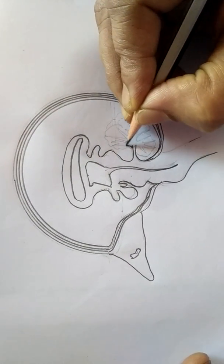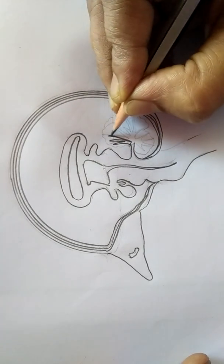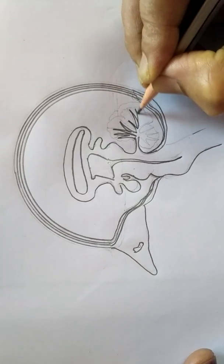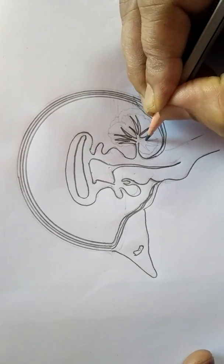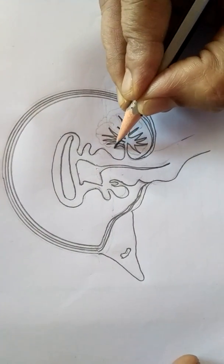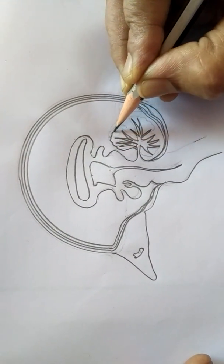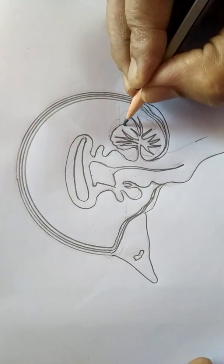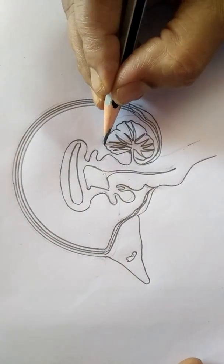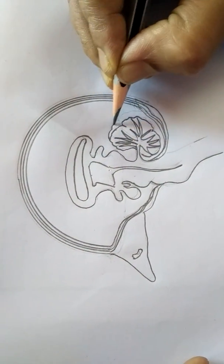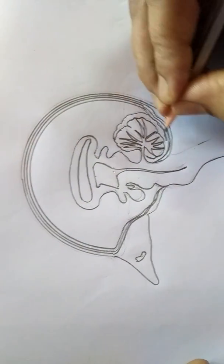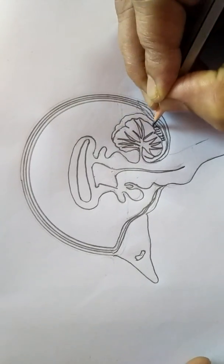First you draw the branches with the pointed pencil. Draw the branches like this. Afterwards, around this, draw like this and double line for this. And fill this space with the straight lines.